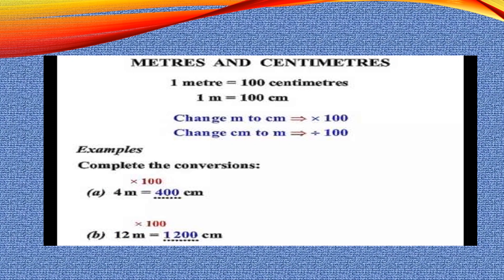We will understand the relation between meters and centimeters more clearly and how to change the units. One meter is equal to one hundred centimeters — meaning one hundred centimeters make one meter. When we have to change meter to centimeter, we multiply by one hundred. When we change centimeter to meter, we divide by one hundred.